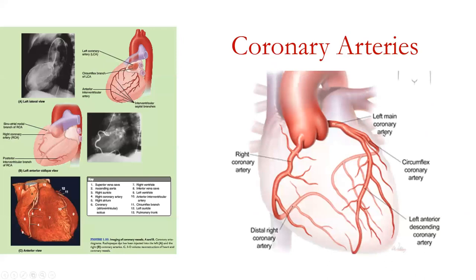For coronary arteries — commonly asked about, high yield — understanding the coronary arteries and their branching points is important. There are two main branches: the left main coronary and the right coronary. We're going to look at branching from the aortic arch shortly, but for now let's focus on what's covering the heart. From the left main coronary artery, it branches into the circumflex and the left anterior descending.